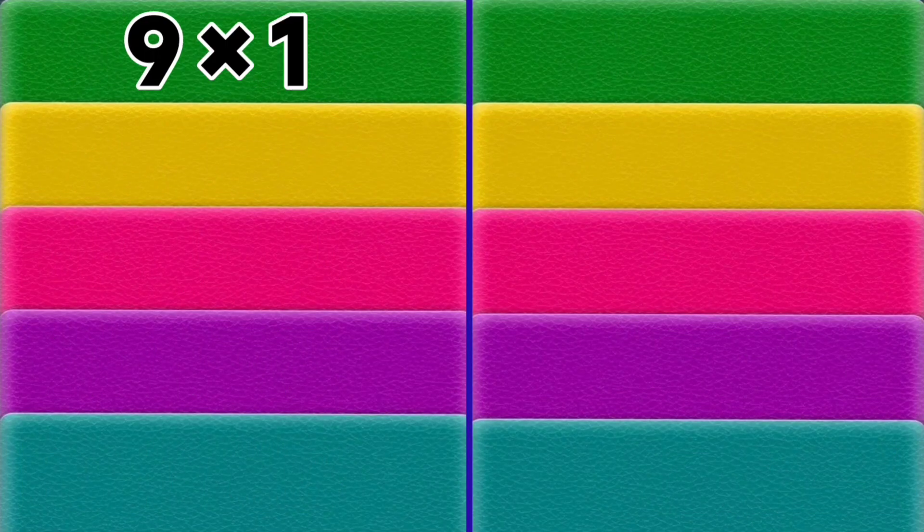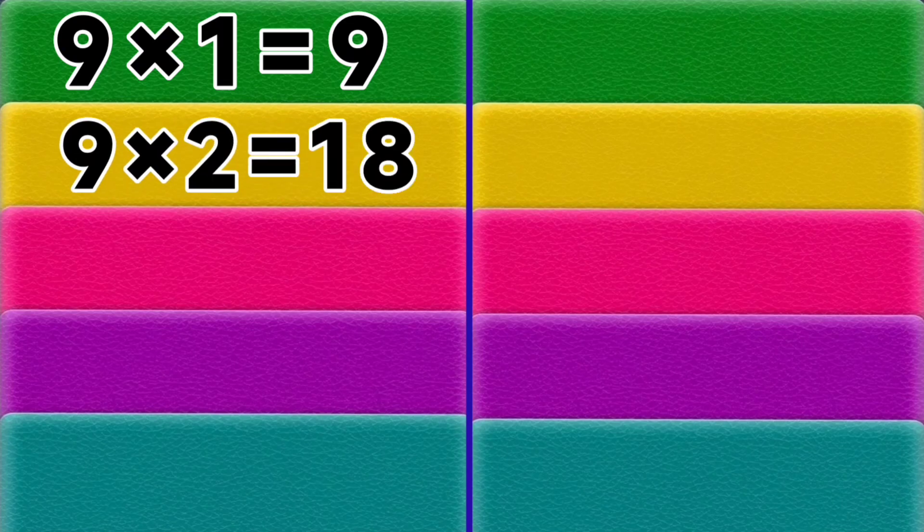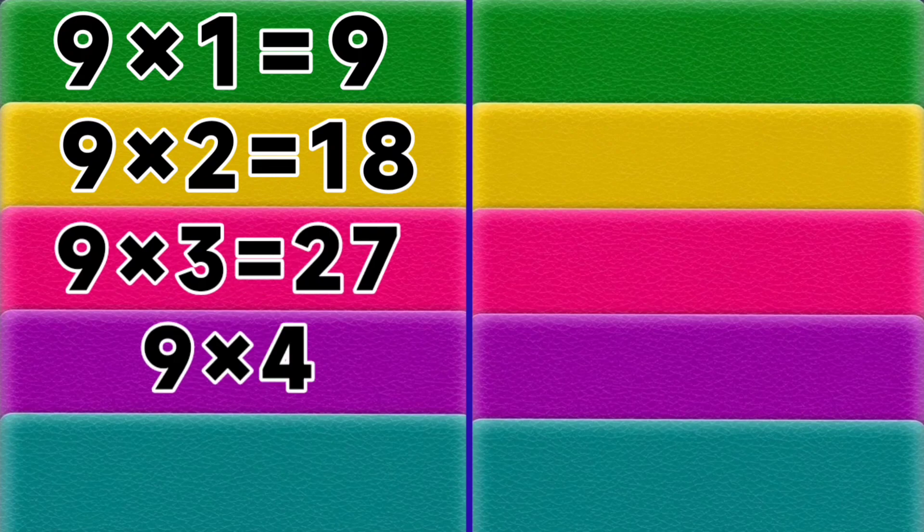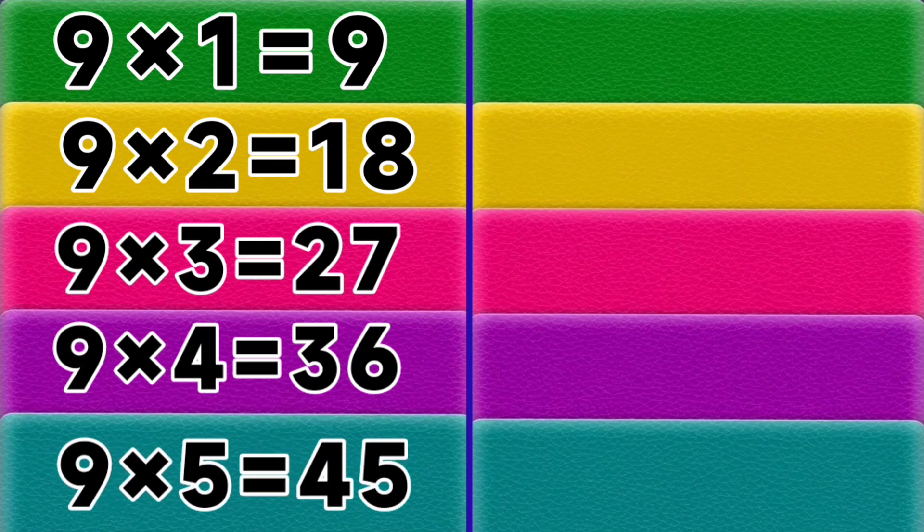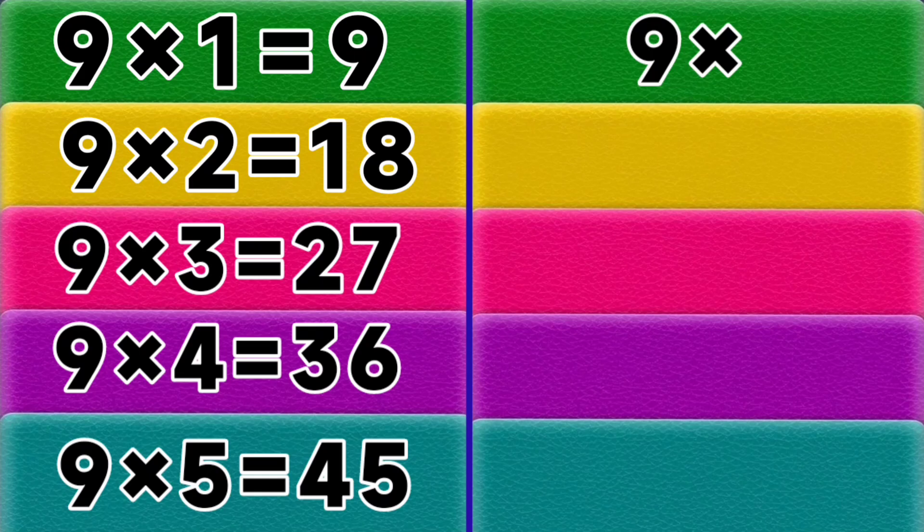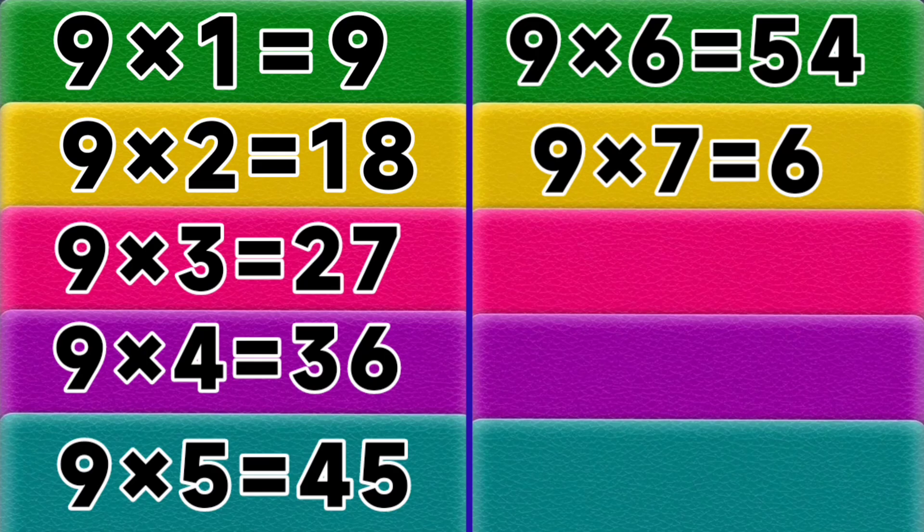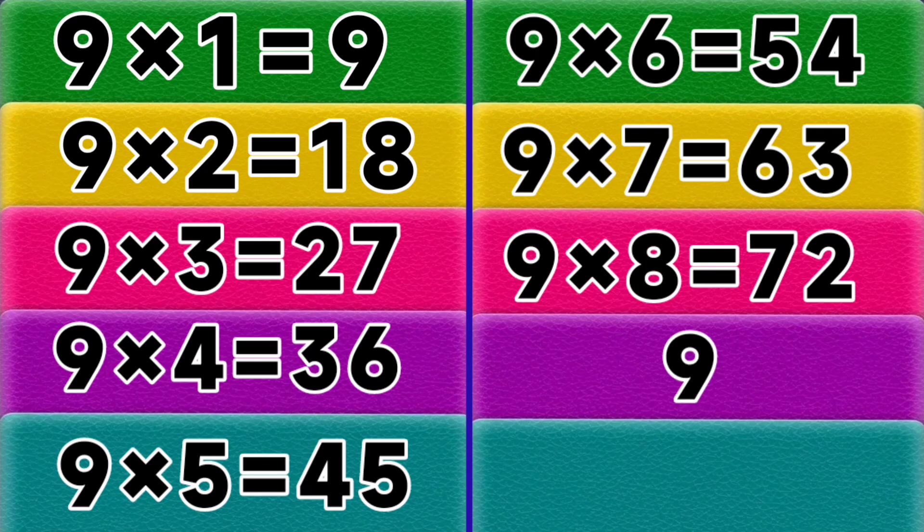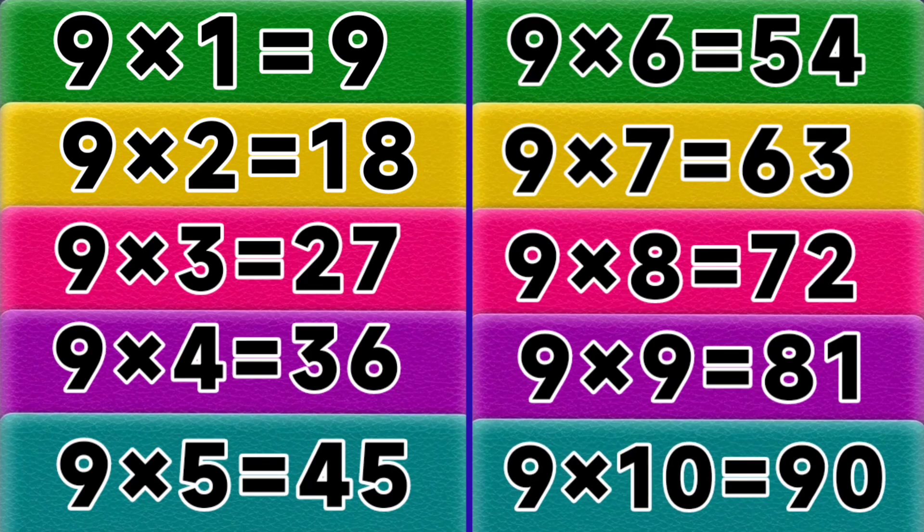9 ones are 9, 9 twos are 18, 9 threes are 27, 9 fours are 36, 9 fives are 45, 9 sixes are 54, 9 sevens are 63, 9 eights are 72, 9 nines are 81, 9 tens are 90. Table of 10.